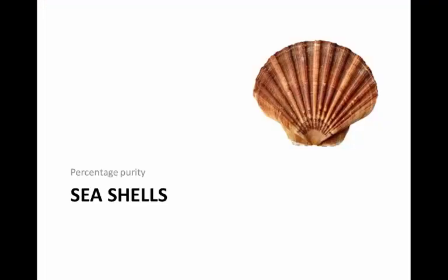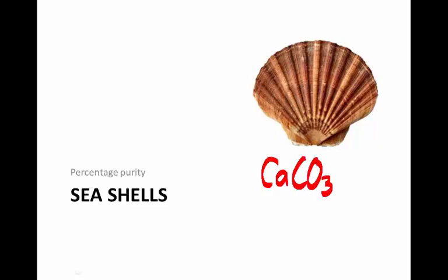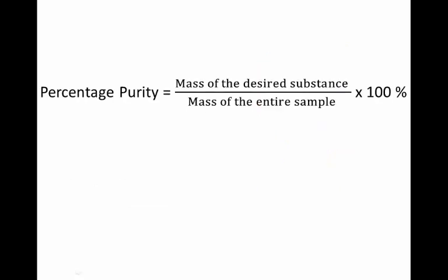What is percentage purity? A seashell is composed largely of calcium carbonate, but not everything inside the seashell is calcium carbonate. Some of it is calcium carbonate and some of it is other chemicals. So if we want to know how pure a certain shell is with regards to calcium carbonate, what we want to know is what percentage of that shell is calcium carbonate. Here's the formula for percentage purity.